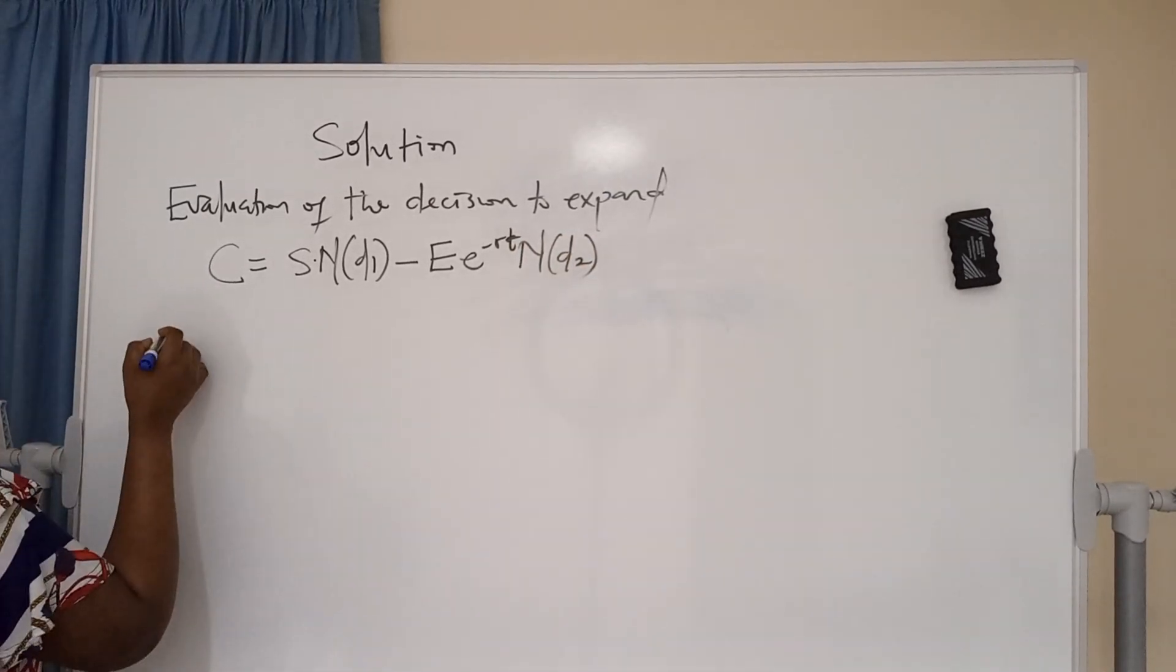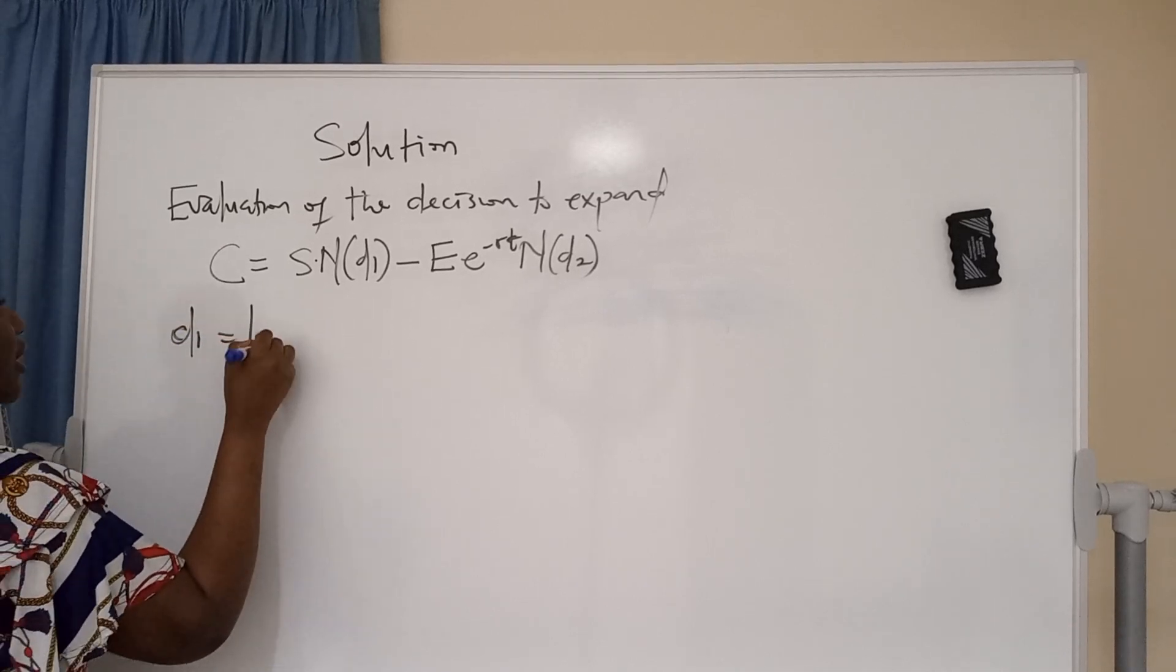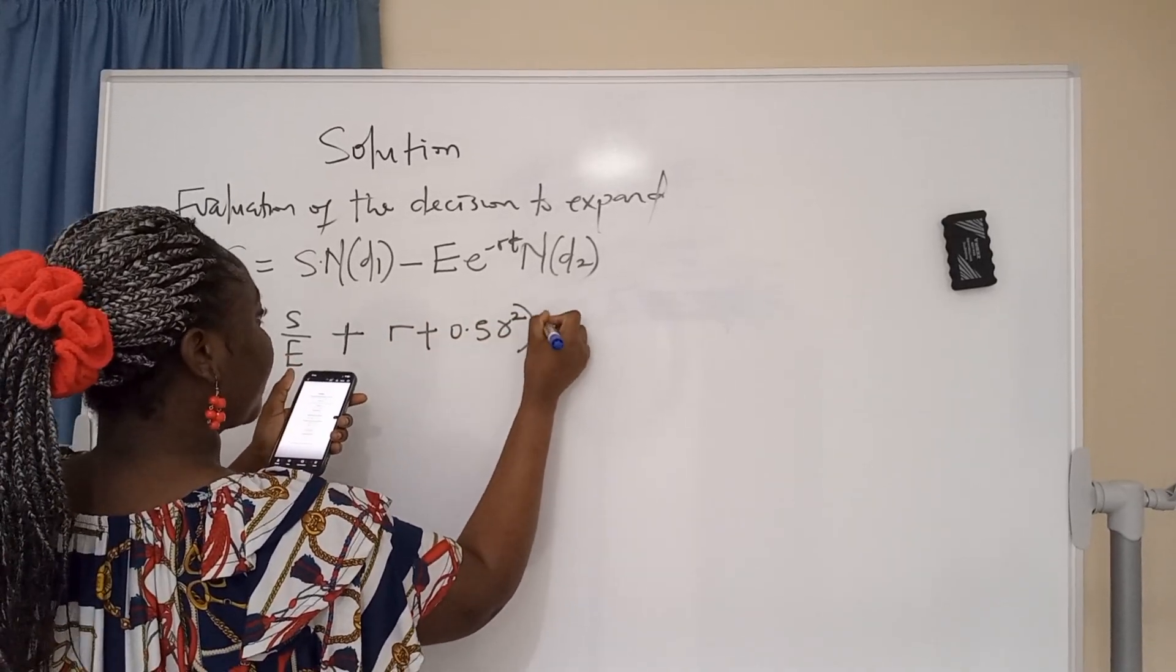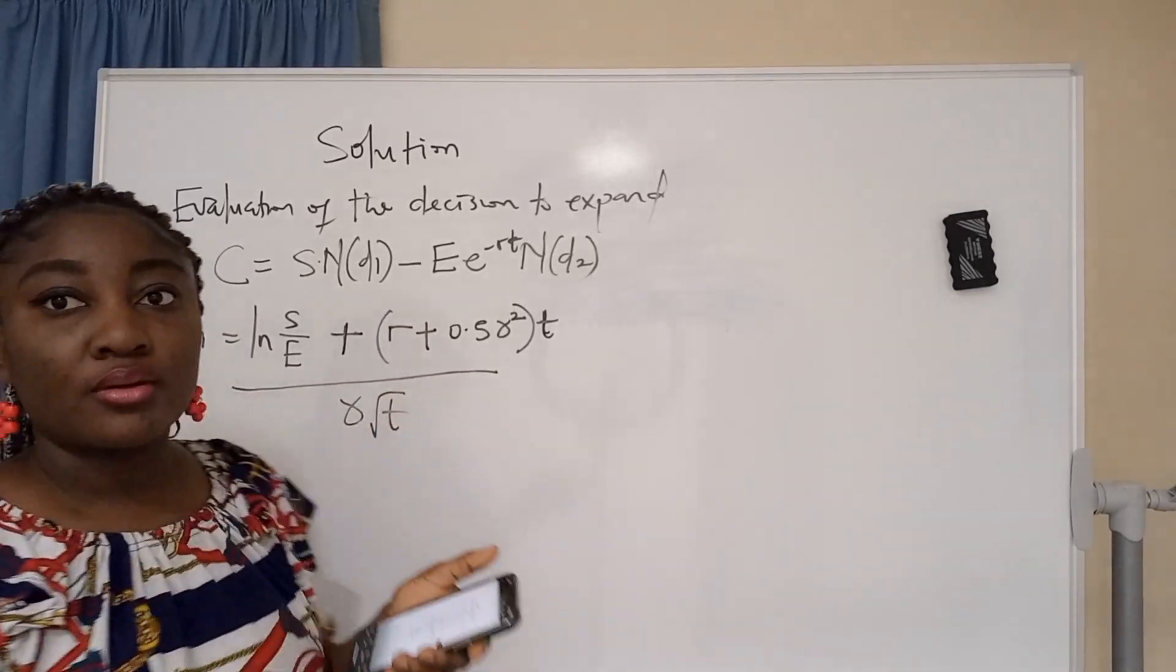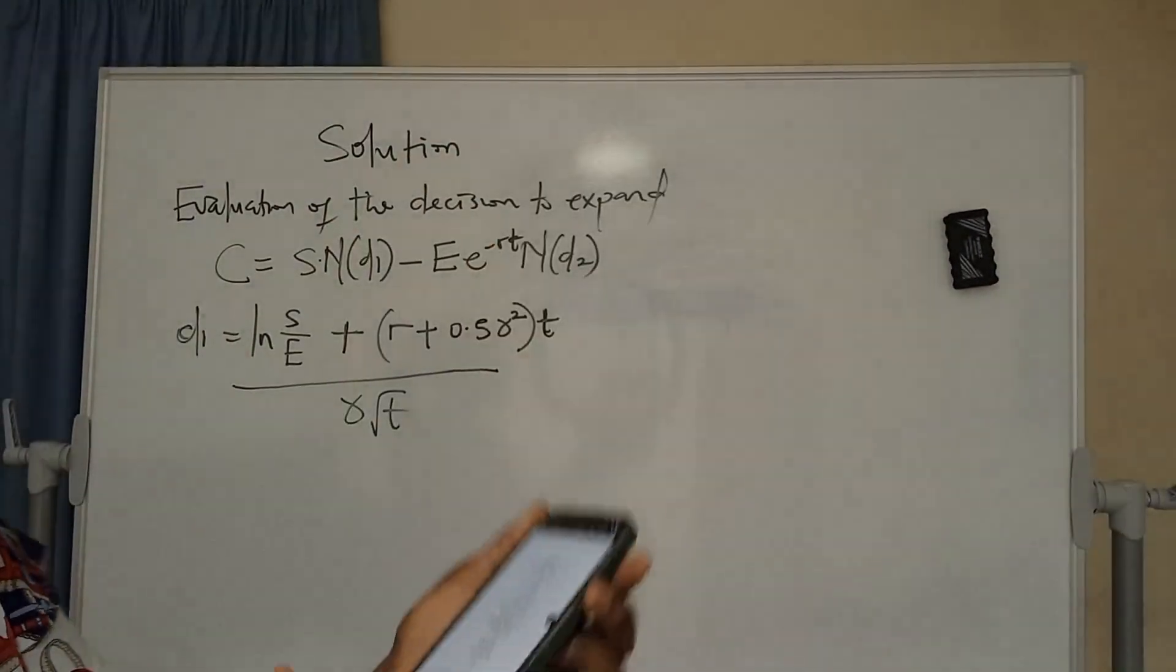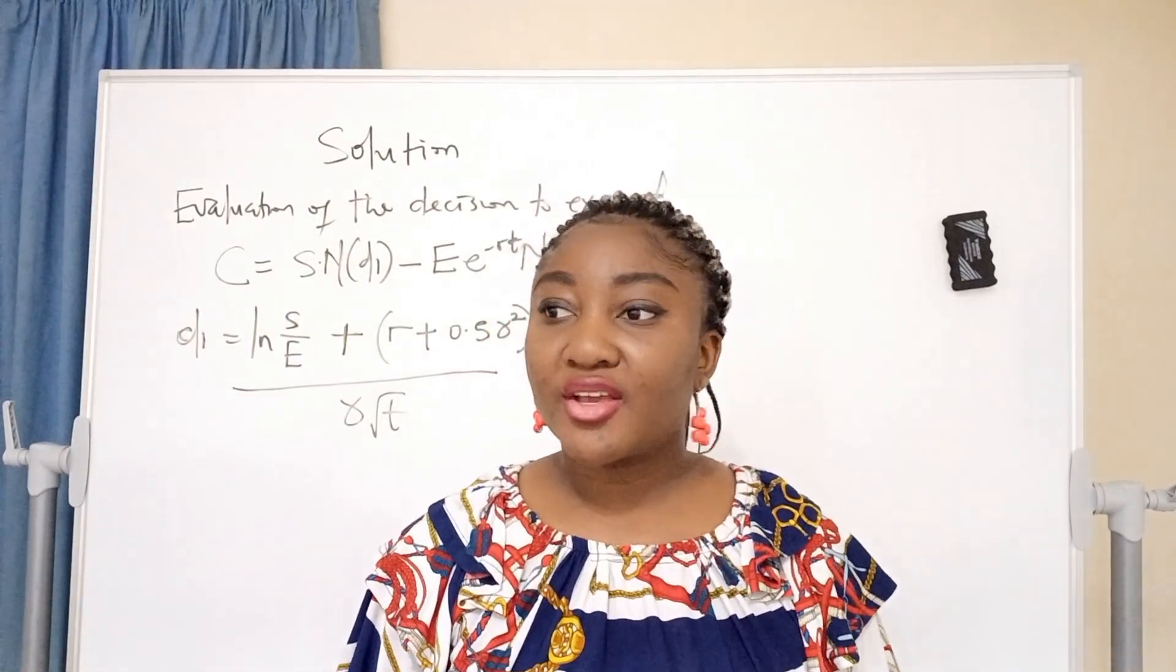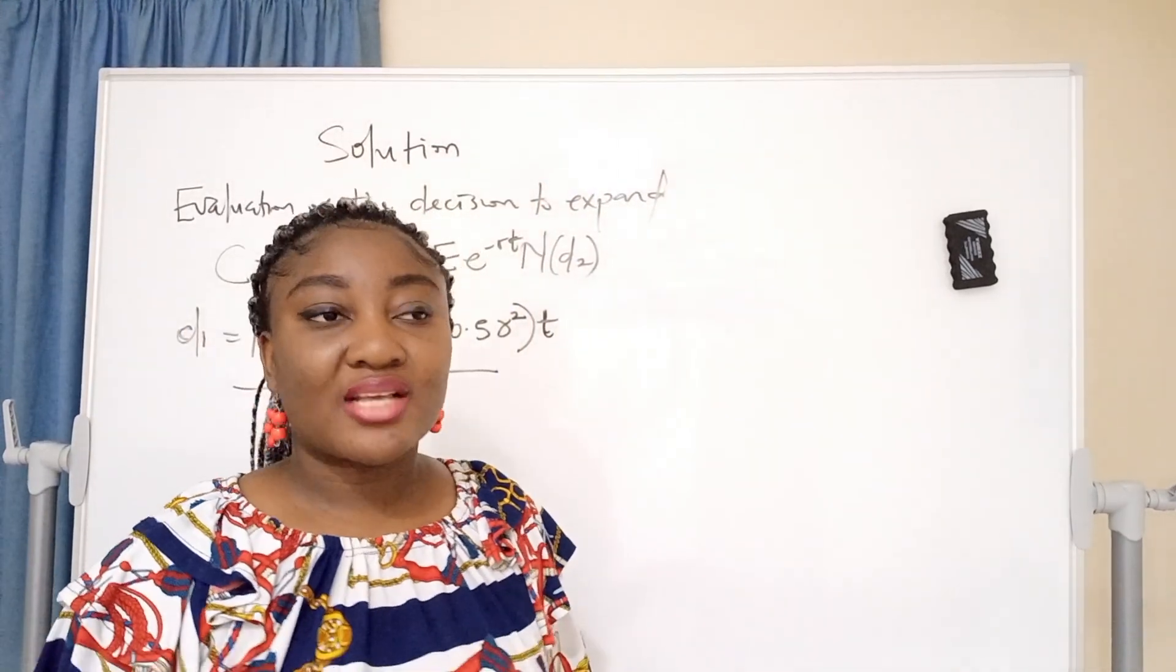Remember this formula. Then you get your D1, because you don't know your D1. D1 equals natural log of S over E plus R plus 0.5 standard deviation squared multiplied by T, all over standard deviation root T. This is where I'm checking the formula from. The formula is in the exam pack behind. Any option pricing question is actually a bonus question because you have the formula, you have the table. It's just that a lot of people are not prepared, that's why they ignore it.